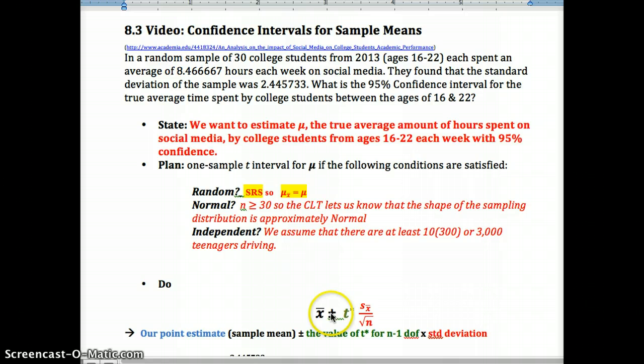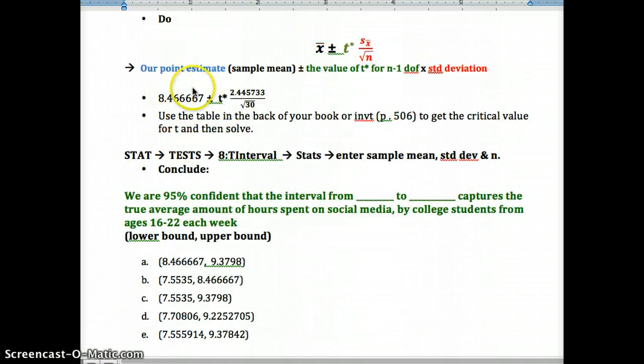So let's plug in and now do our calculations. Here we are on the do step. We plug in our point estimate, which is our sample mean, x bar, plus or minus the critical value t times our standard error. And our standard error here is the standard deviation of the sample divided by the square root of the sample size. Now I'd like you to use the table in your back of your book, or inverse t, which you can see I do on page 506. I think the table is easier. I'd go there. Find degrees of freedom. Remember, that's n minus 1. And then find where that column intersects the 95% confidence interval.